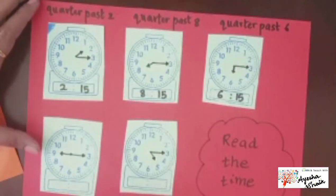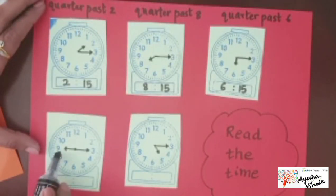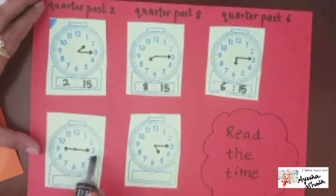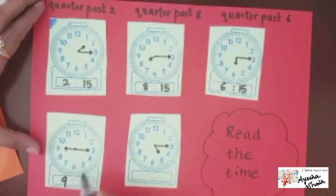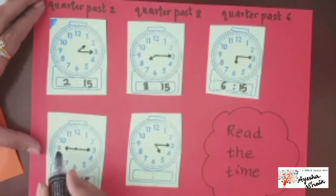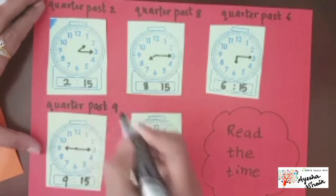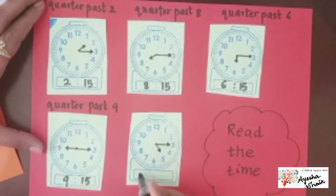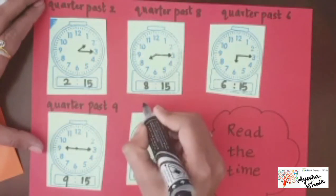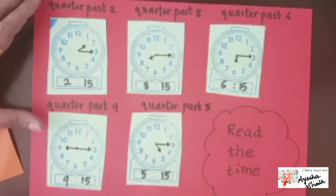Let's keep going. Short hand on 9, long hand on 3 — the time is 9:15, and the analog time is quarter past 9. Next: the time is 5:15, and the analog time is quarter past 5. Easy, isn't it?